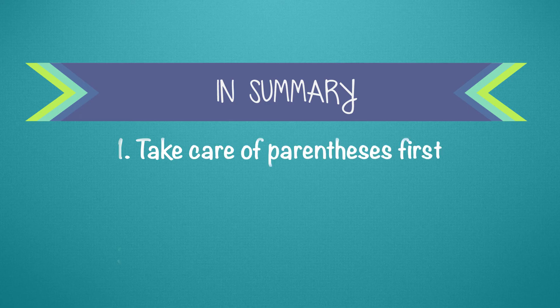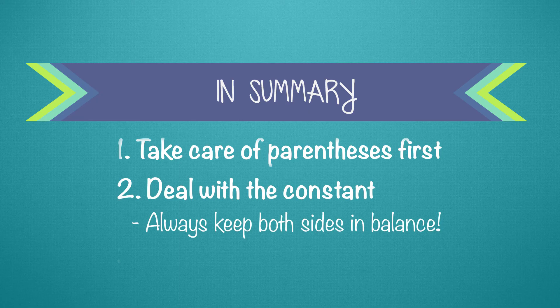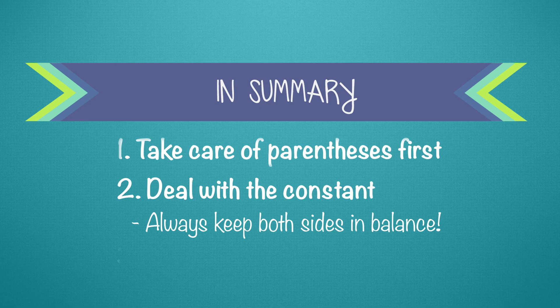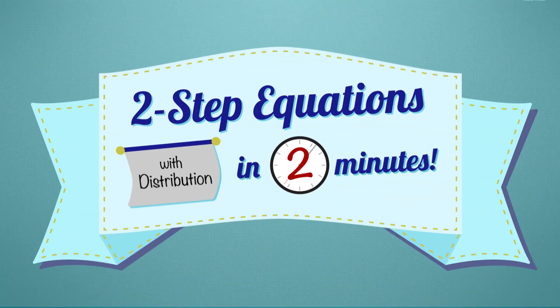If we see parentheses in an equation, we do those first, and that gets us back to a two-step equation. First, we deal with the lonely number, the constant. Be sure to keep both sides in balance. Second, deal with the coefficient to get x by itself and keep both sides in balance. And there you have it, two-step equations with the distributive property in two minutes.